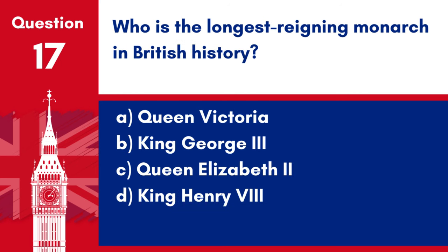Question 17. Who is the longest reigning monarch in British history? a. Queen Victoria. b. King George III. c. Queen Elizabeth II. d. King Henry VIII. Answer: c. Queen Elizabeth II. Queen Elizabeth II is the longest reigning monarch in British history.